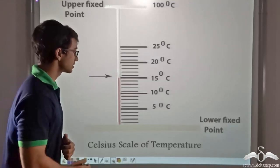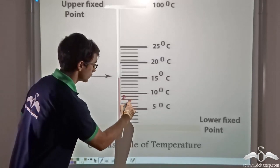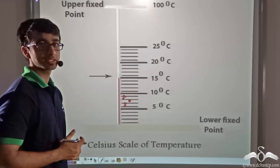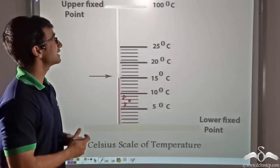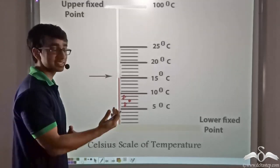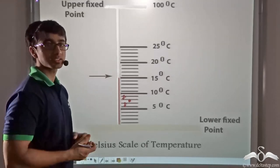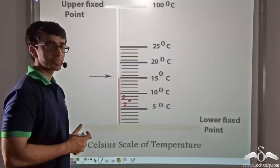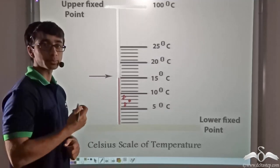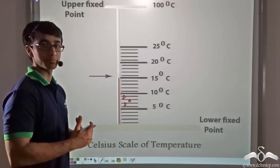Each part corresponds to a reading of 1 degree Celsius, because we are dividing the region between 100 degrees Celsius and 0 degrees Celsius into 100 equal parts. This is justified because the change in height of the liquid column is directly proportional to T, that is the change in temperature.